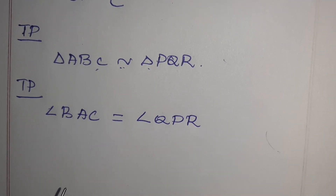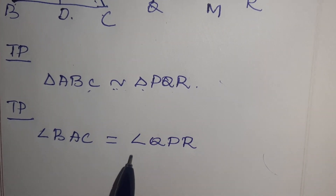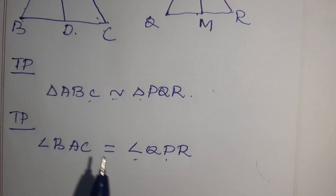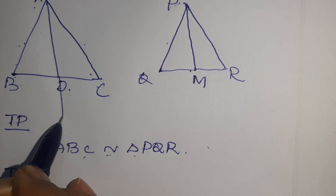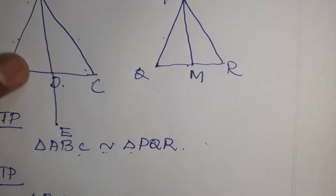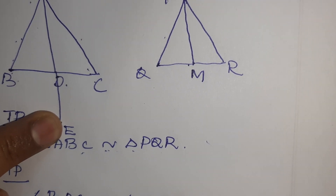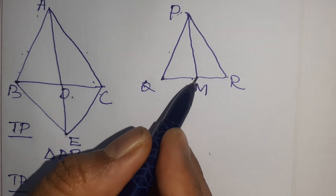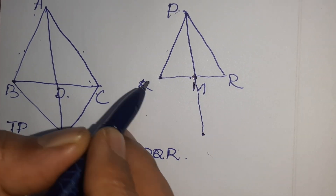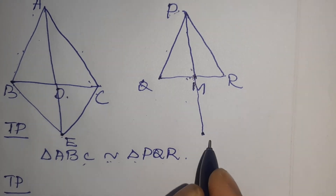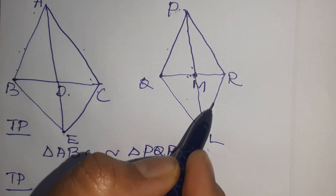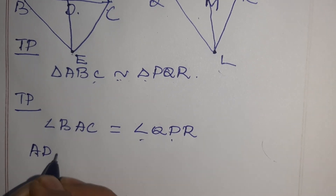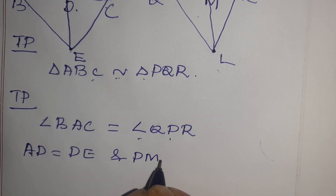For that, only the median is given. So I extend AD to E such that AD equal to DE. Then we join BE and EC. Then PM is extended to L such that PM equal to ML. Now join QL and RL. This is the construction. From the construction we know that AD equal to DE and PM equal to ML.